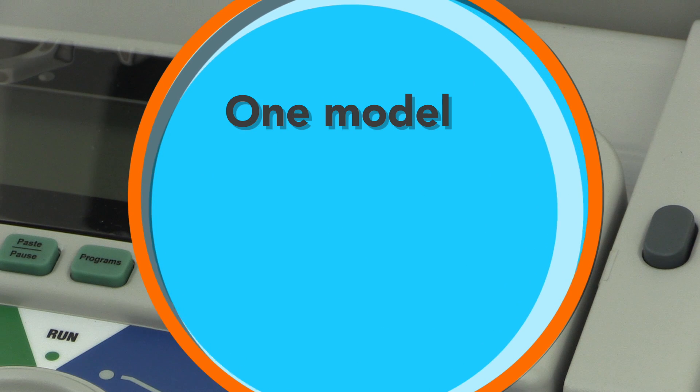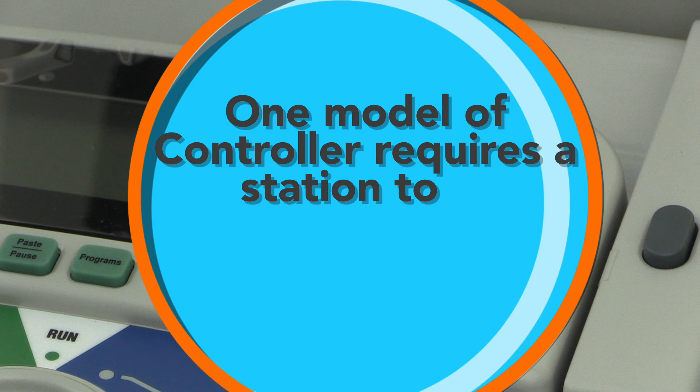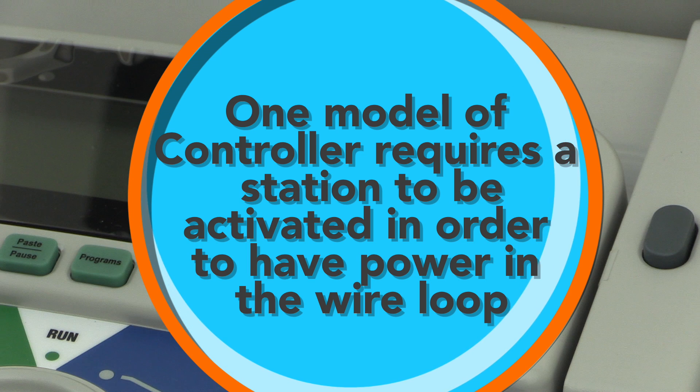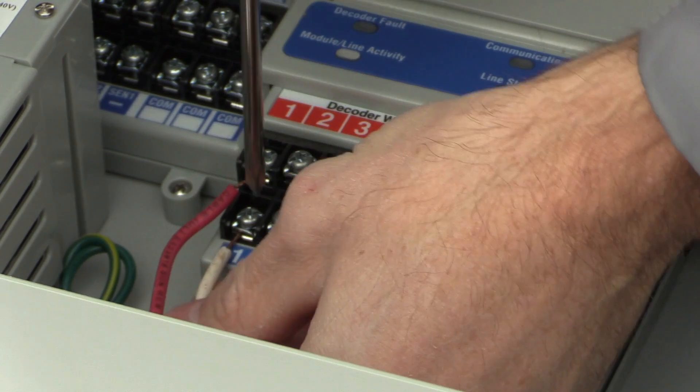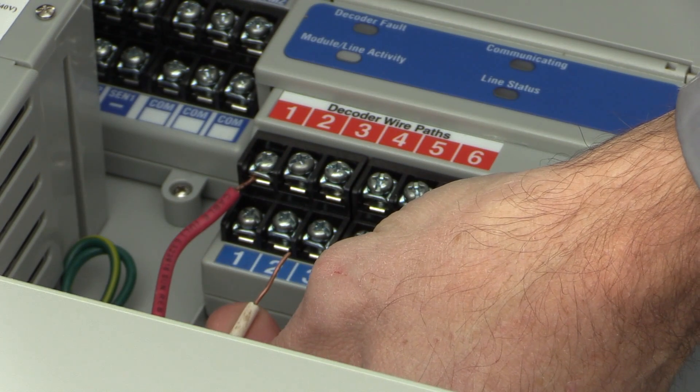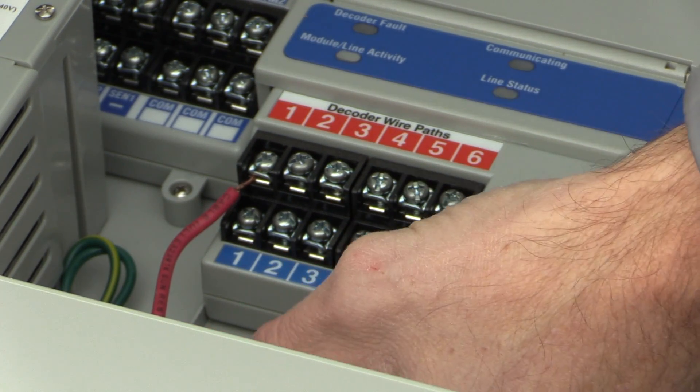Note that one model of controller requires a station to be activated in order to have power in the wire loop. A special note, if your two wire path loops back to the controller, you will need to disconnect one leg of the loop from the controller or power source to complete troubleshooting.